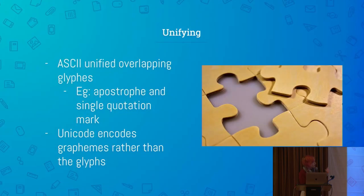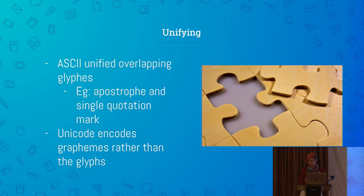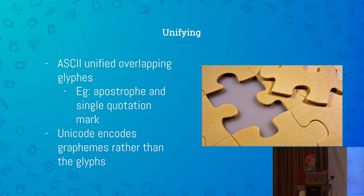When ASCII was created, it decided to unify some overlapping glyphs it saw — like the apostrophe and the single quotation mark being the same, not unique characters at all. But when Unicode was created, it was focusing a lot more on the graphemes over the glyphs, because it wanted to have a lot more characters.